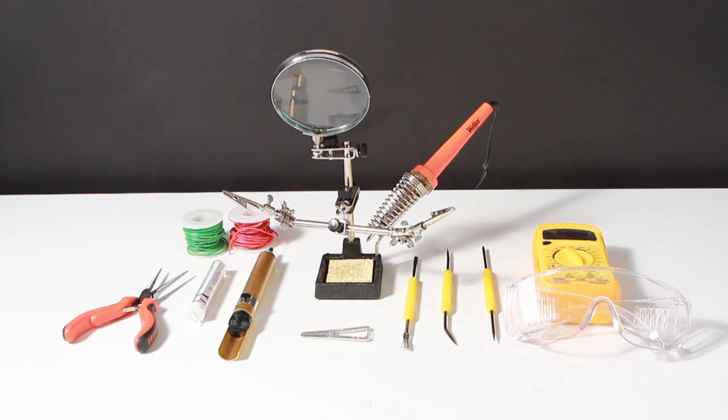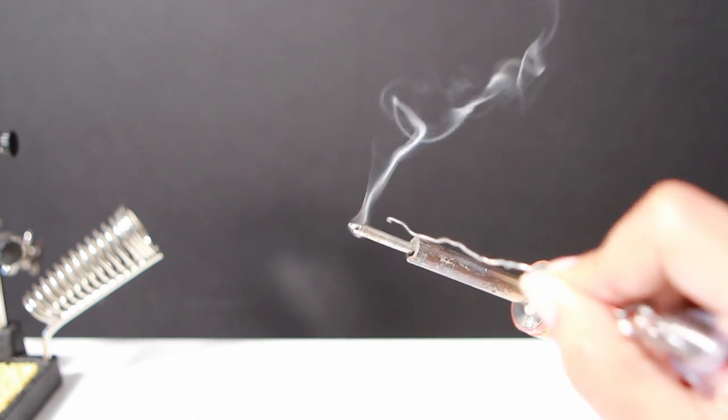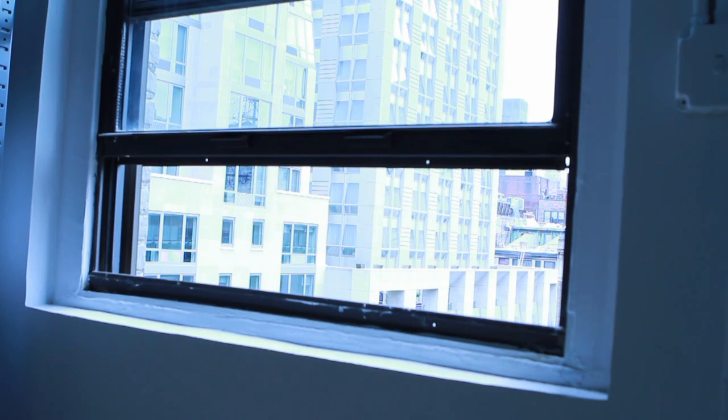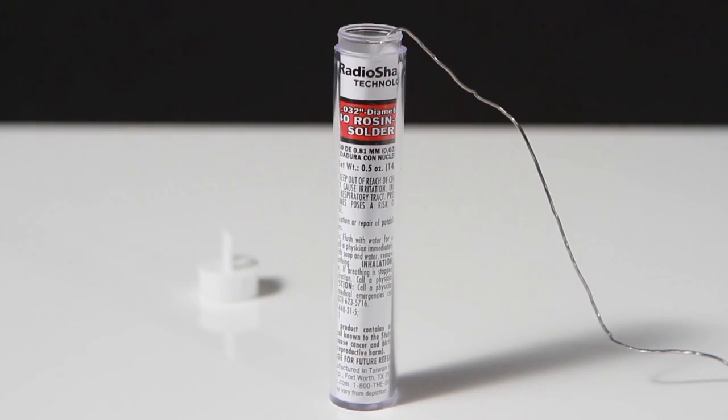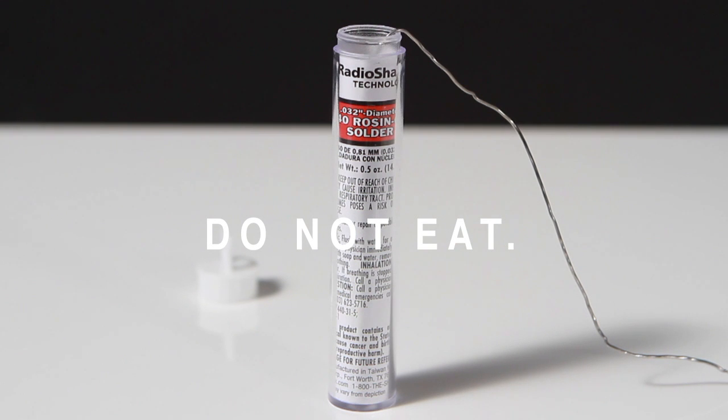Having an appropriate environment in which to solder is important for both productivity and safety. Soldering will result in varying degrees of fumes that you should try not to breathe in. Make sure wherever you're soldering, fresh air can circulate. Solder also contains lead, so it's best if you cover any open sores and wash your hands afterwards. Please don't put any solder in or around your orifices.